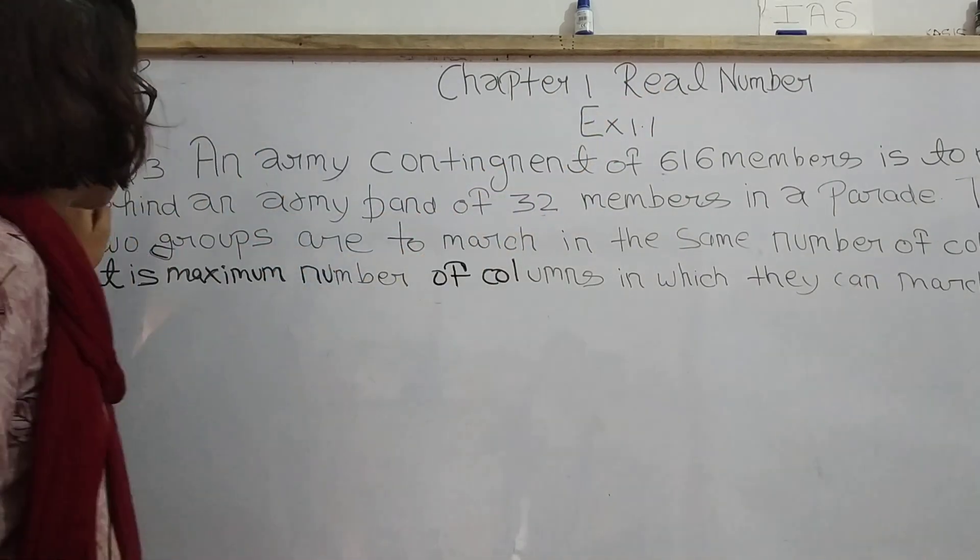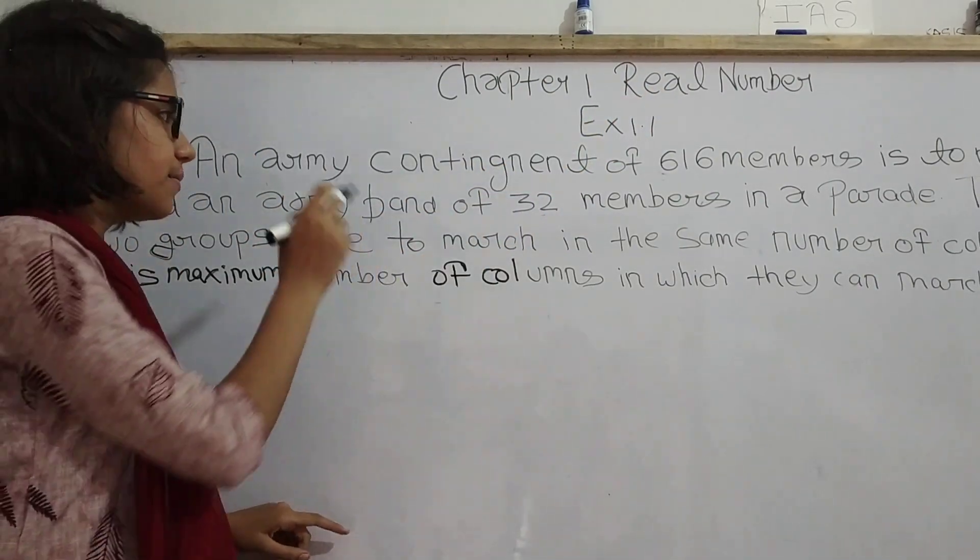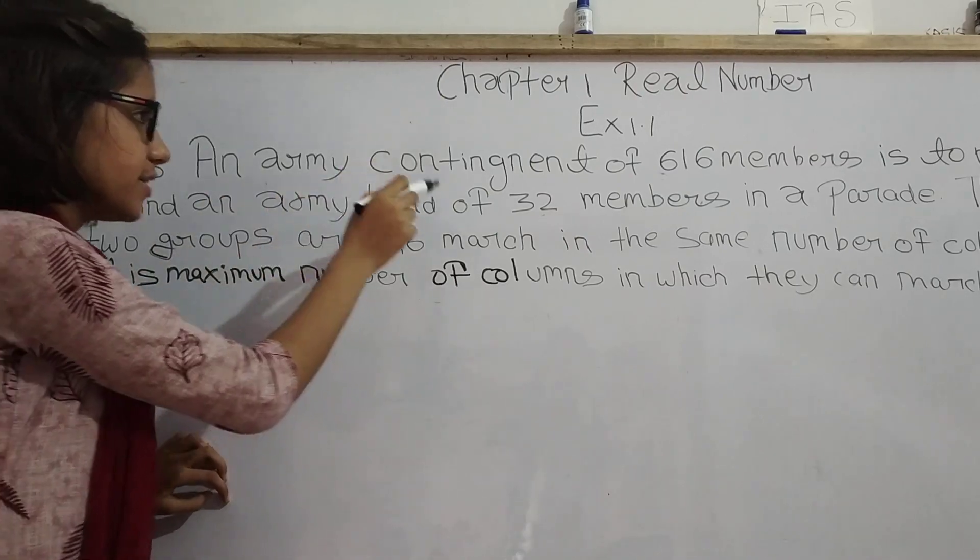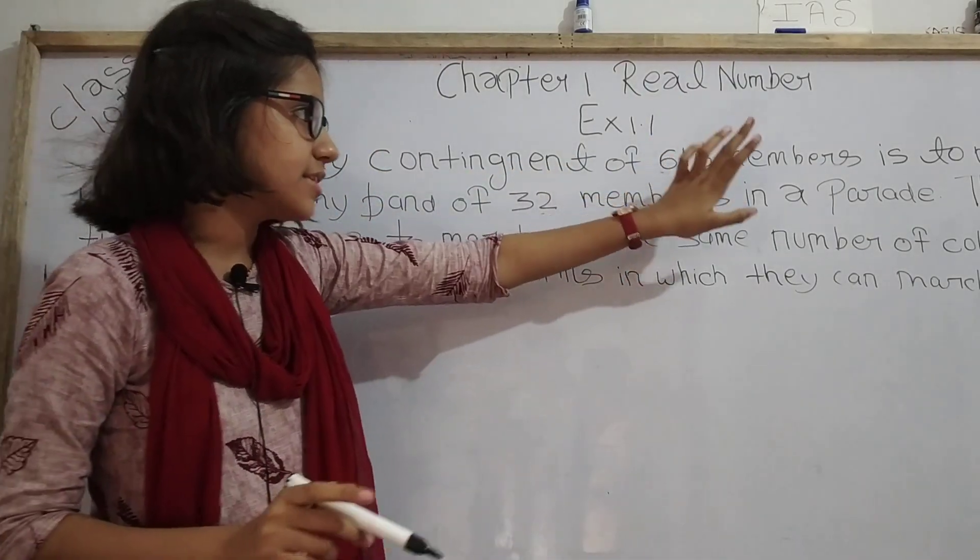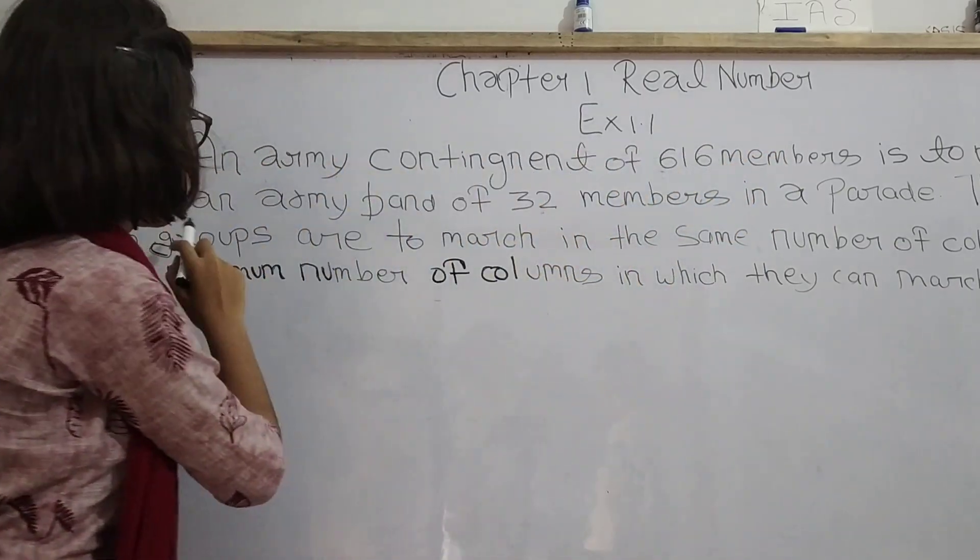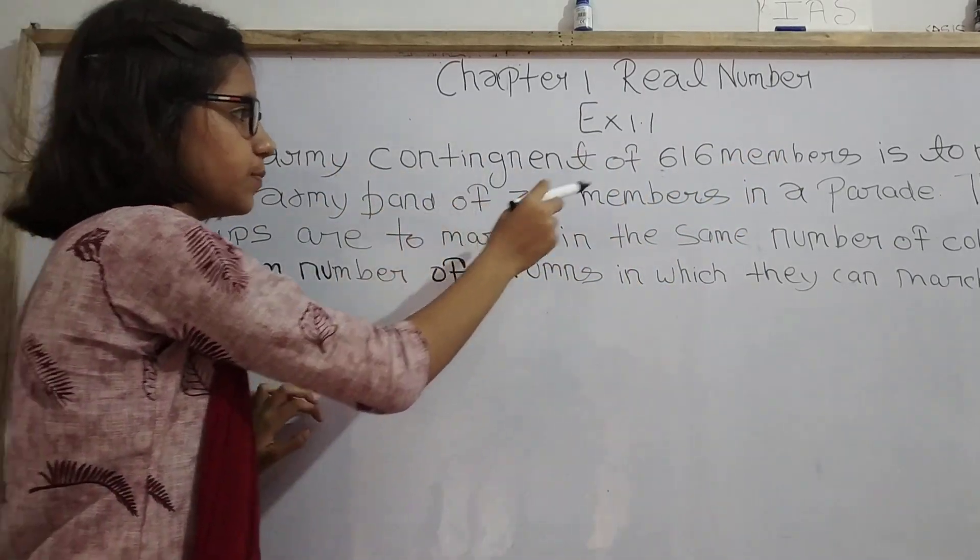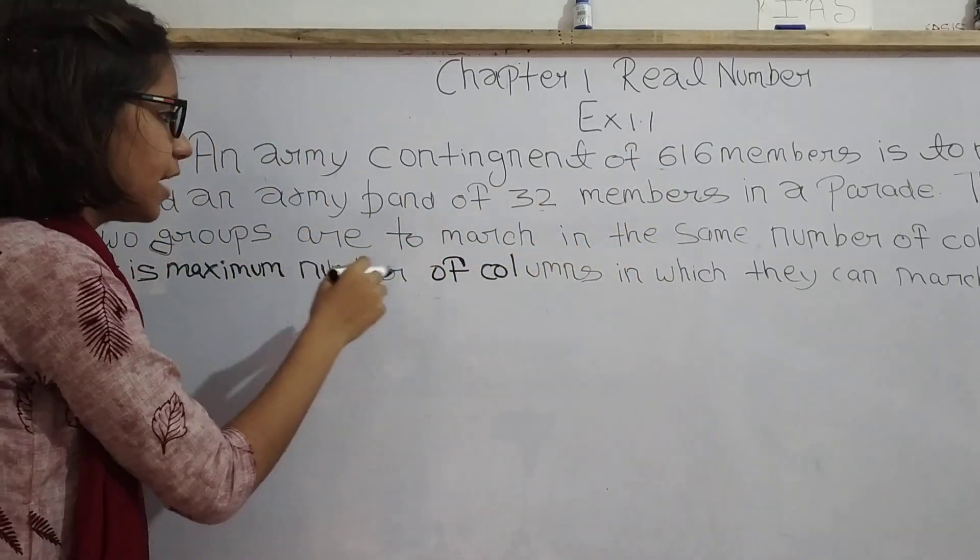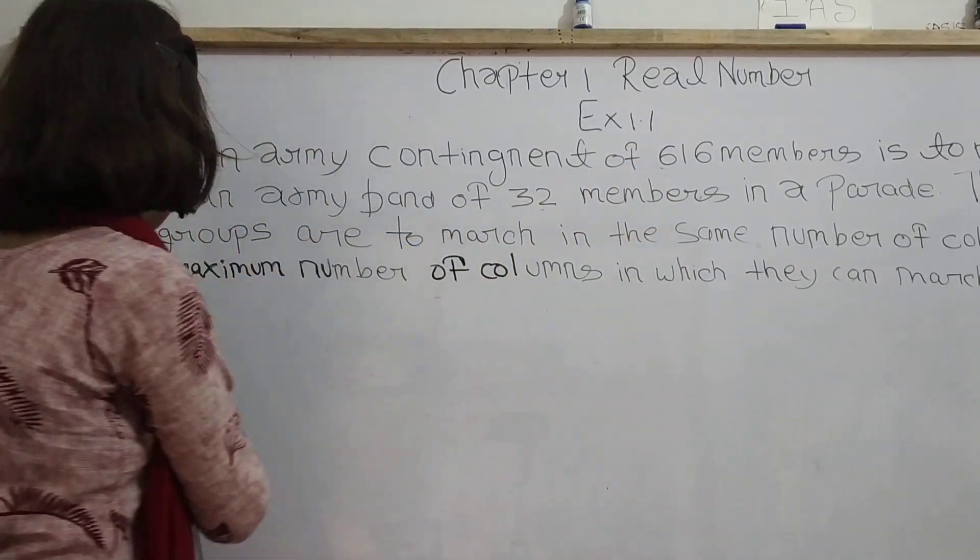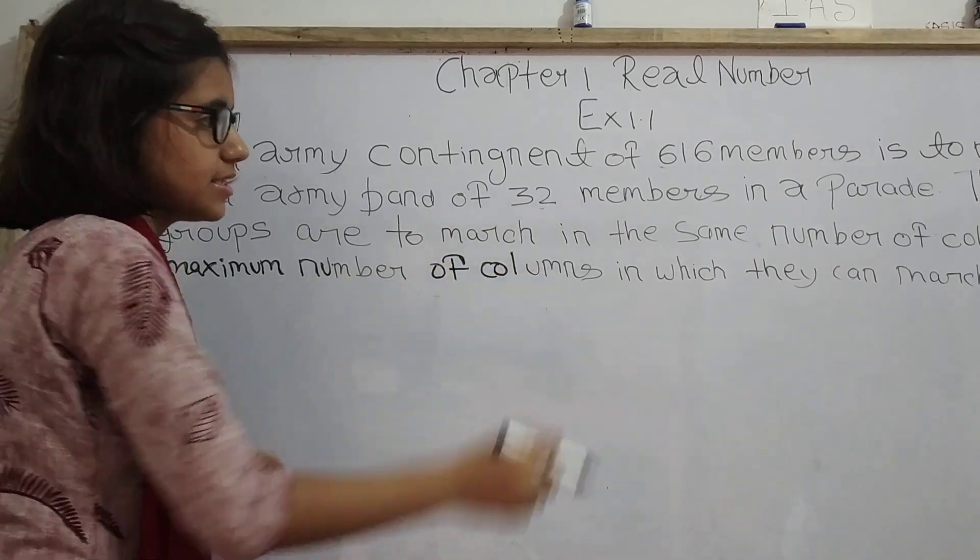The question asks: An army contingent of 616 members is to march behind an army band of 32 members in a parade. The two groups are to march in the same number of columns. What is the maximum number of columns in which they can march?